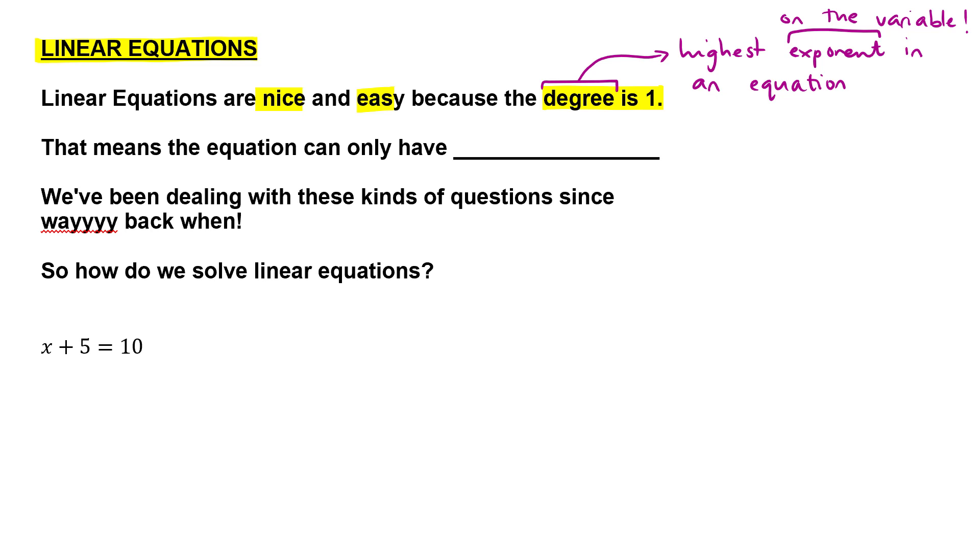In an example then, if I gave you something like x cubed minus 3x squared plus 2x equals zero, you can clearly see that the highest exponent on the variable x is that 3 over there. So that would mean that for this equation here the degree is 3.